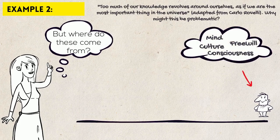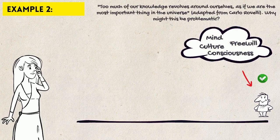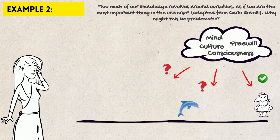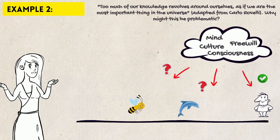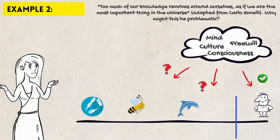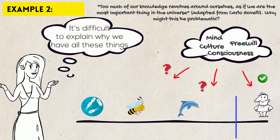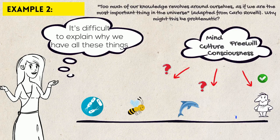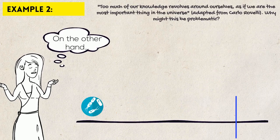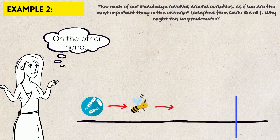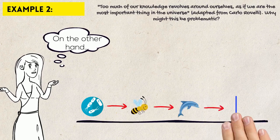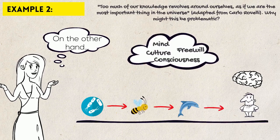Why do humans have minds, consciousness, free will, and culture? Do other animals have them? If they do, where in the evolutionary process do they start having them? Do dolphins have consciousness? Do bees have a culture? How about bacteria? If human scientists believe that we are the most important thing in the universe, they will naturally assume that we humans have characteristics that nobody else has — but then they will find it difficult to explain how these characteristics appear. On the other hand, if we believe that humans are not unique, that they are nothing but a slightly more evolved brain, then it will be easier to see the connections to the rest of the biological world. Psychologists will collaborate with biologists, and perhaps one day all pieces of this puzzle will come together.